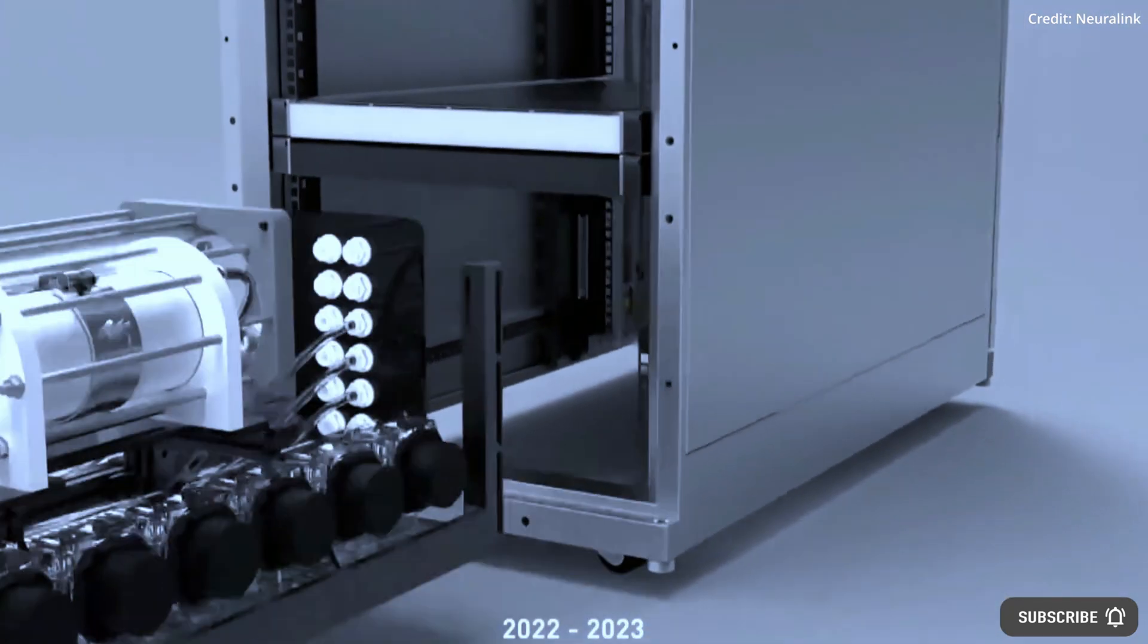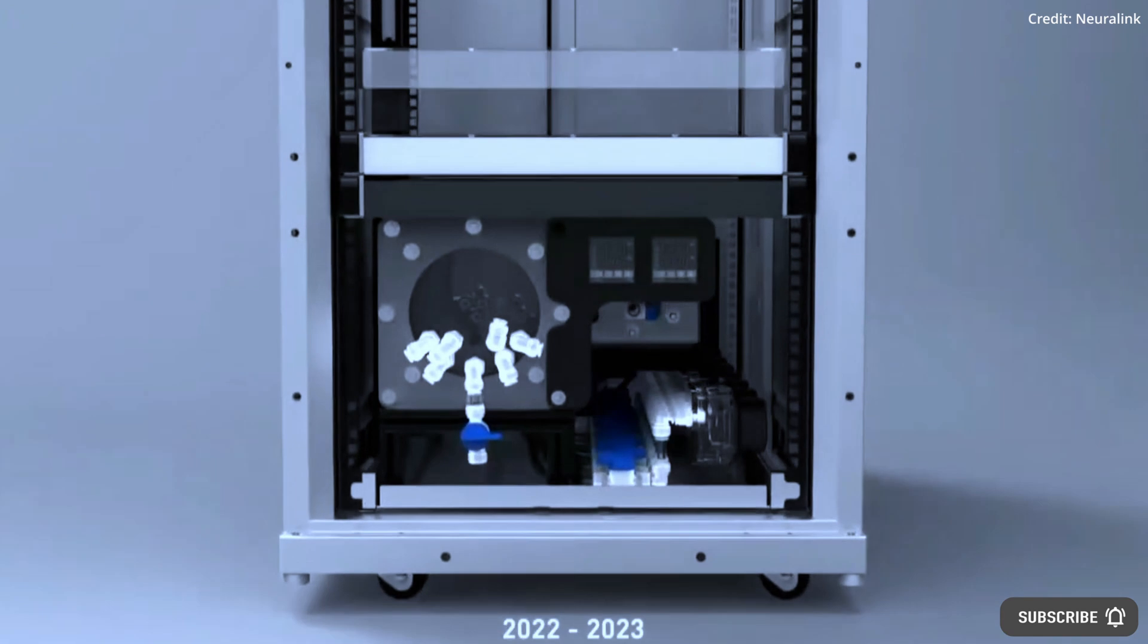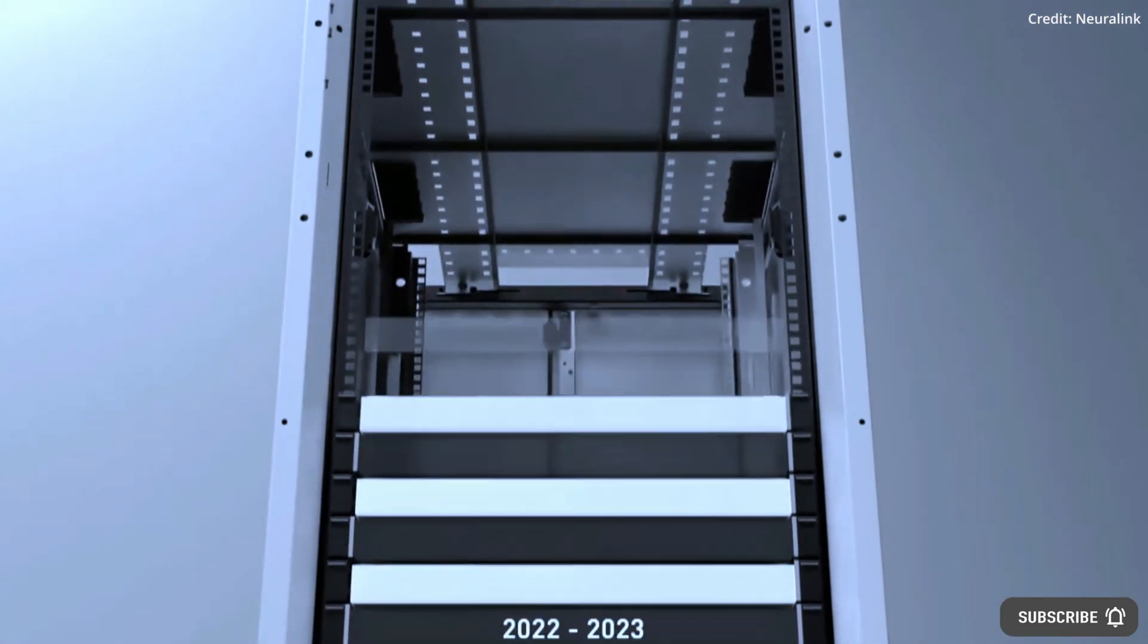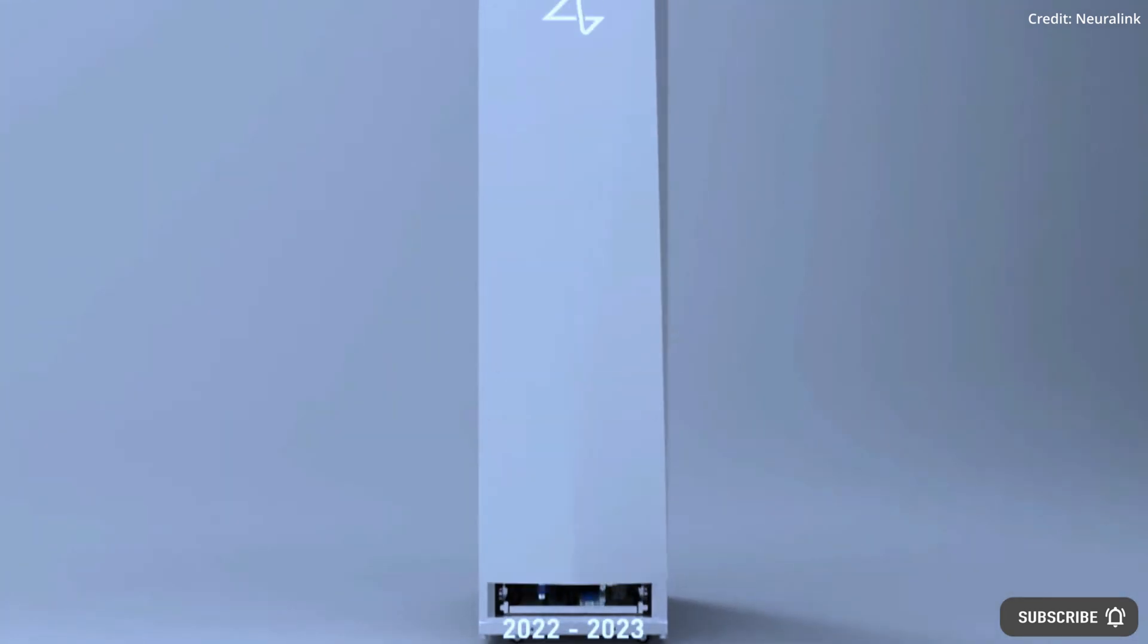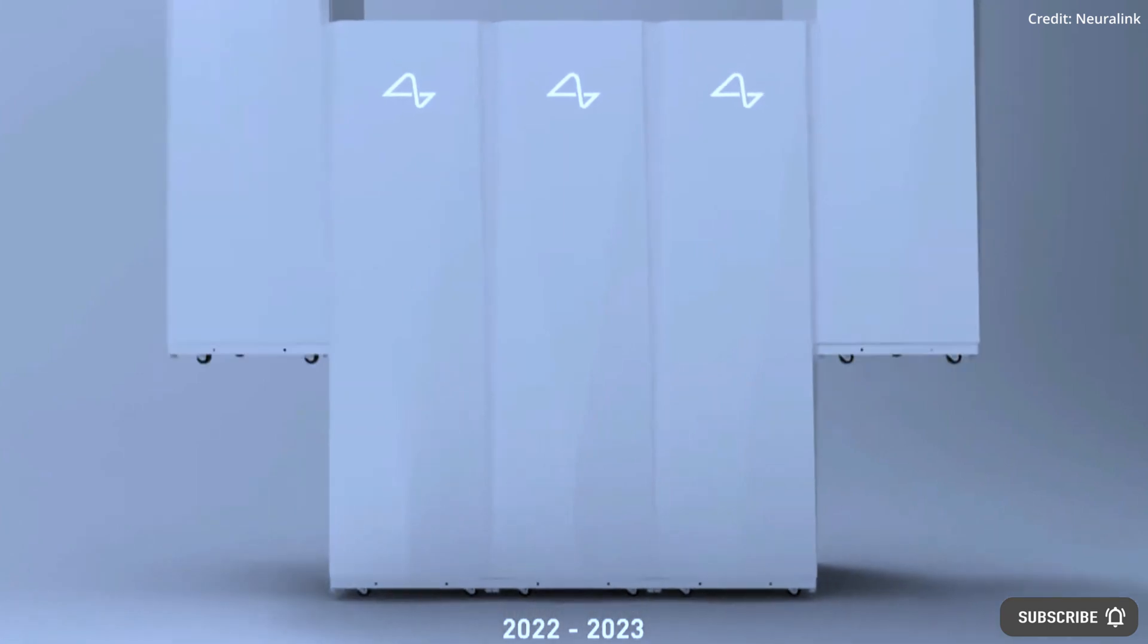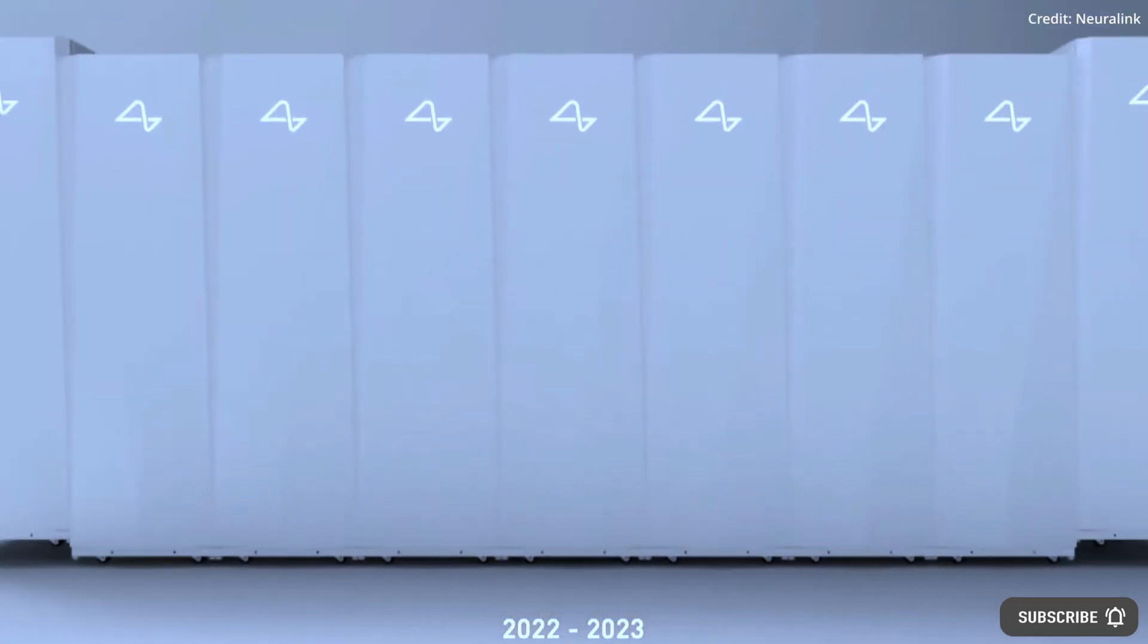The R1 surgical robot will help neurosurgeons to implant Neuralink's N1 chip, and as they continue to improve their surgical device technology, it will automate more and more of the surgery, which will make the R1 robot and the N1 implant surgery procedure more and more affordable in the future.